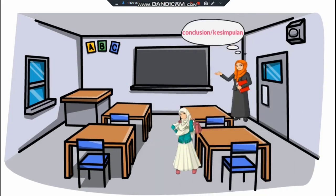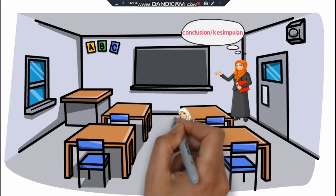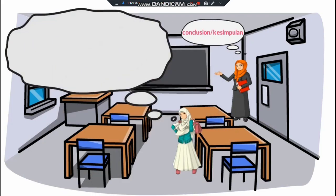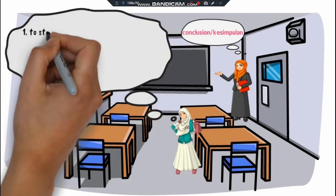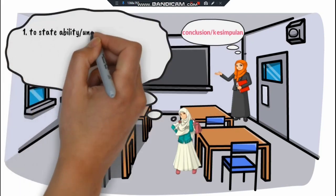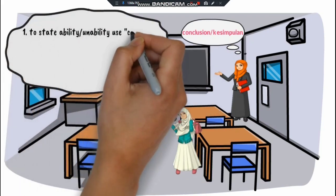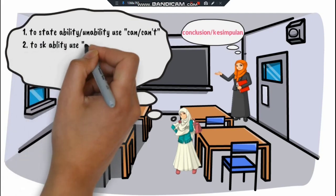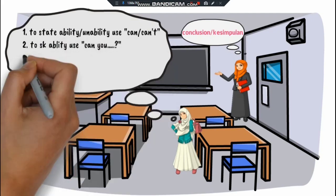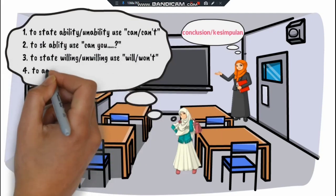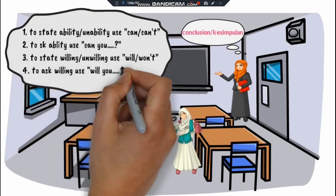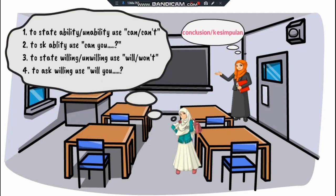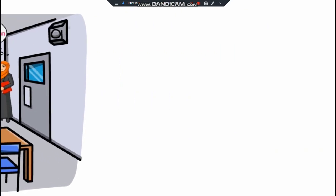Conclusions. Kesimpulan. Number one: to state ability and inability, use can or can't. Number two: to ask about ability, use can you. Number three: to state willingness and unwillingness, use will or won't. Number four: to ask willingness, use will you.